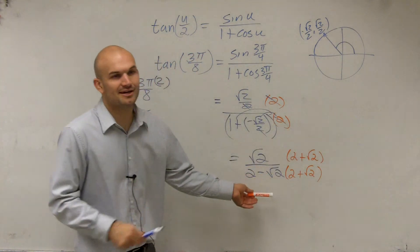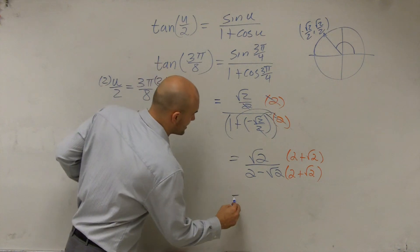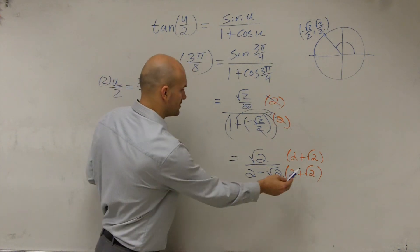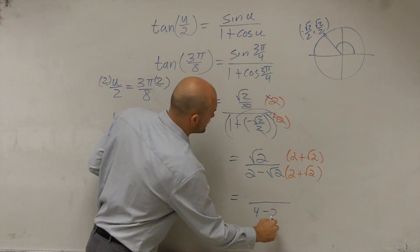So we know what we're going to have down here. By multiplying by the conjugate, we're going to have a difference of two squares. So we're going to eliminate our term. So what we'll have is 4 minus, oh, I'm sorry, we'll have 4 minus 2.